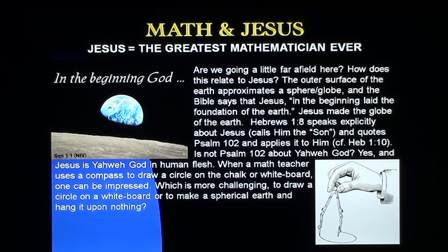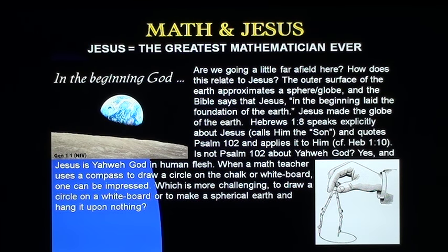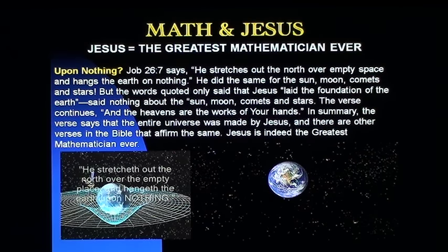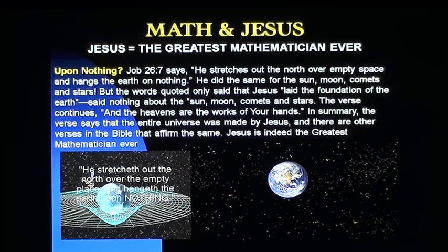Some people might say, 'I thought Psalm 102 was about Jehovah God, or Yahweh God.' Yes, and Jesus is Jehovah God in human flesh. When a math teacher uses a compass to draw a circle on the chalkboard or whiteboard, one can be impressed. Which is more challenging — to draw a circle on a whiteboard, or to make a spherical earth and hang it on nothing? Job 26 says: 'He stretches out the north over empty space and hangs the earth on nothing.'